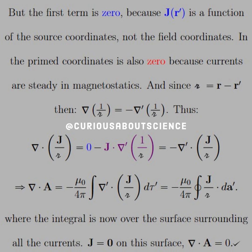In the prime coordinates, the second product rule, it's also 0 because in order to understand magnetostatics, we said that the currents were steady. Therefore, we don't have any divergence of the current because it's a constant, and the derivative of a constant is 0.